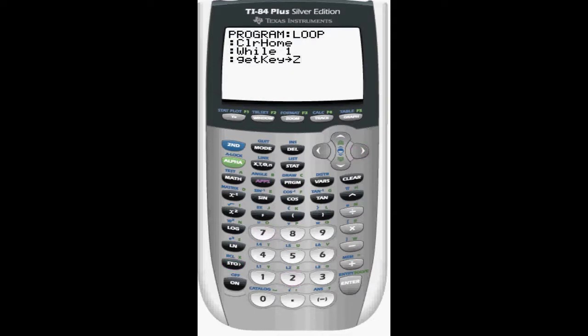The get key is in the second column in row 7. Basically what this is doing is it's saying get a key, so it's waiting for a key input, and then whatever that key input is, it's going to store that value to z. If there's no key input, the z value will be 0, so keep that in mind. If no key is pressed, the value will be 0.